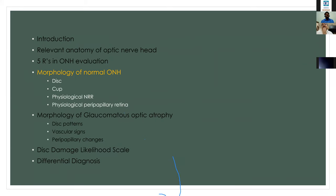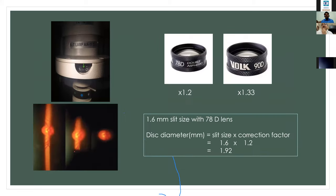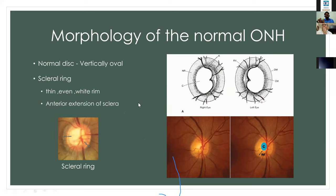Coming to the morphology of the optic nerve head, the normal disc is vertically oval. The scleral ring, which corresponds to the disc margin, is seen as a thin, even white rim — also an anterior extension of the sclera, the tissue of Elschnig. The central part is the cup, and the gap between the cup margin and the disc margin is called the neural retinal rim.